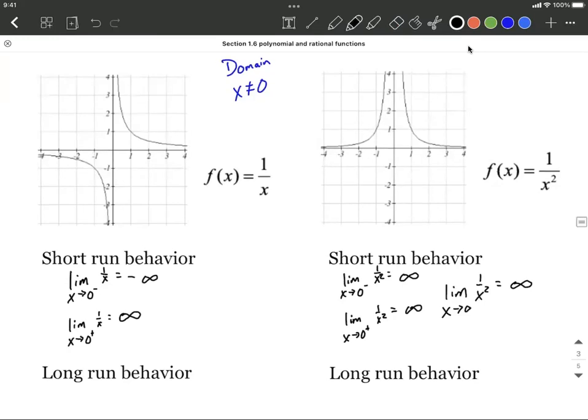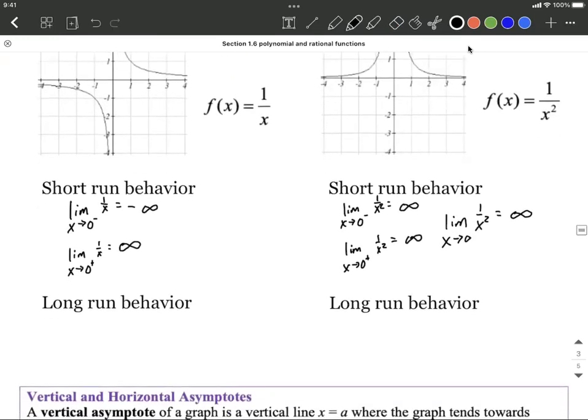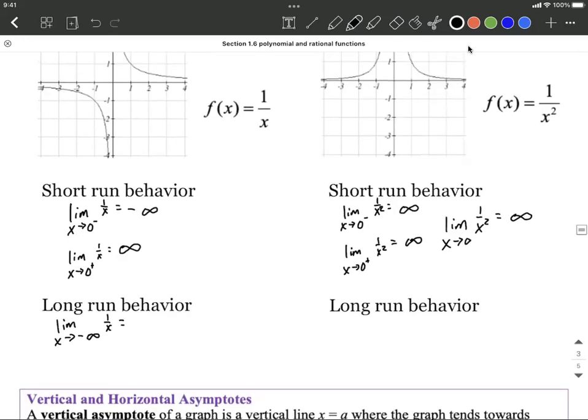So to describe this using limits, what I can say is the limit as our x values go way off to the left hand side or approach negative infinity for 1 over x. What's happening with our graph? Well the y values are getting closer and closer to 0 in this case, right? Getting closer to the x-axis. That's when y equals 0 but it never quite gets there.